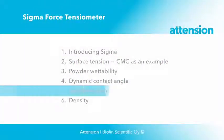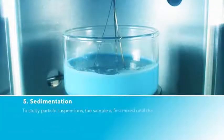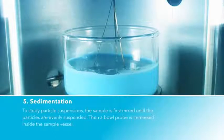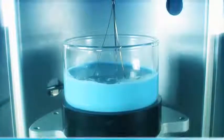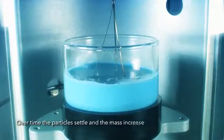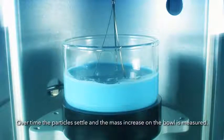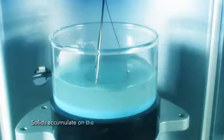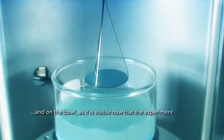Sigma can also measure sedimentation. To study particle suspensions, the sample is first mixed until the particles are evenly suspended. Then a bowl probe is immersed inside the sample vessel. Over time, the particles settle, and the mass increase on the bowl is measured. Solids accumulate on the bottom of the vessel and on the bowl, as it is visible now, that the experiment is over.